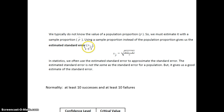Instead of using the letter sigma, we use the letter s. In statistics, we often use the estimated standard error to approximate the standard error. The estimated standard error is not the same value as the standard error for a population, but it's a good estimate.